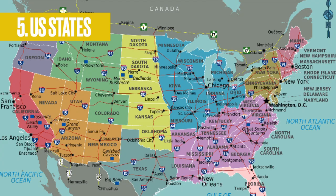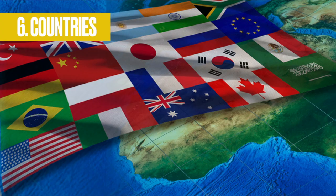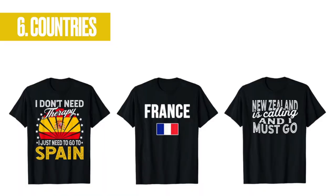Number five is U.S. states — you can swap those out on t-shirts. Instead of California it could say Ohio; instead of Florida it could say Utah; instead of Texas it could say New York. Really easy to swap these out. Going along with that is countries, which can be swapped out easily as well. Instead of France and the France flag, you could have Italy, Spain, New Zealand, or Australia. These are really good to scale your designs.